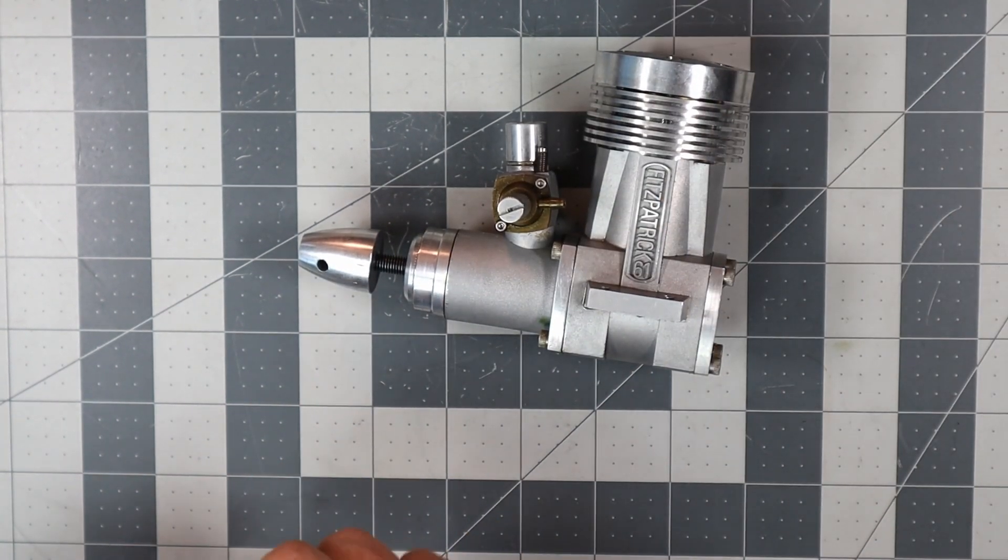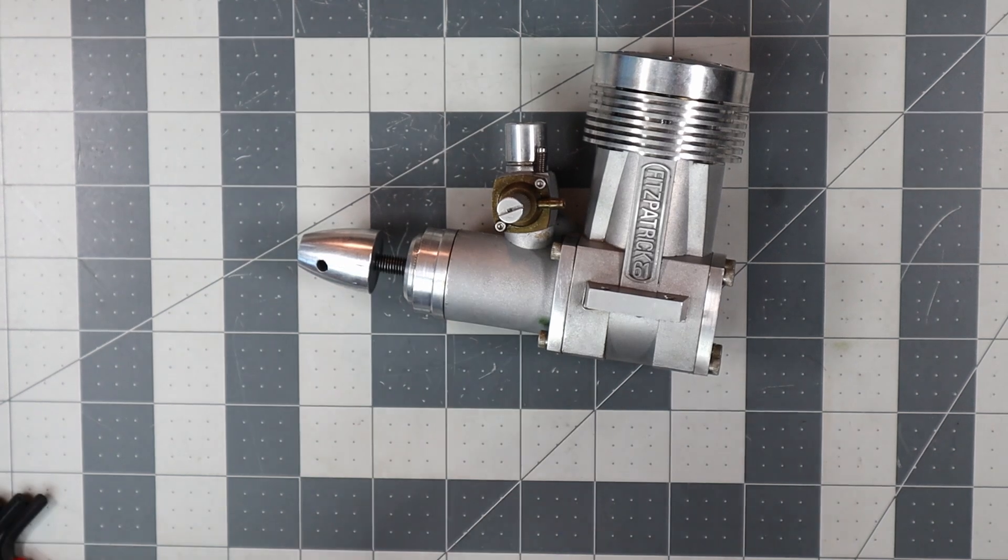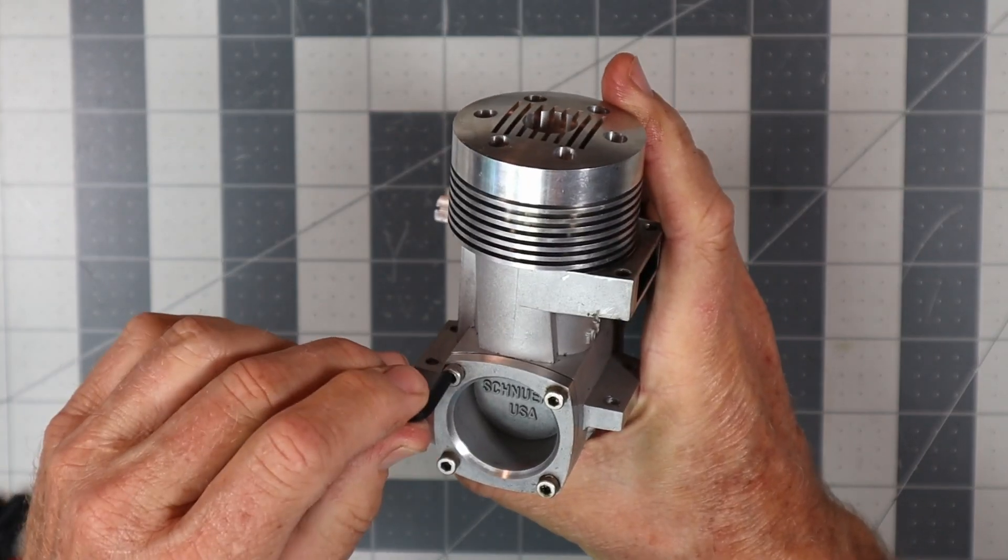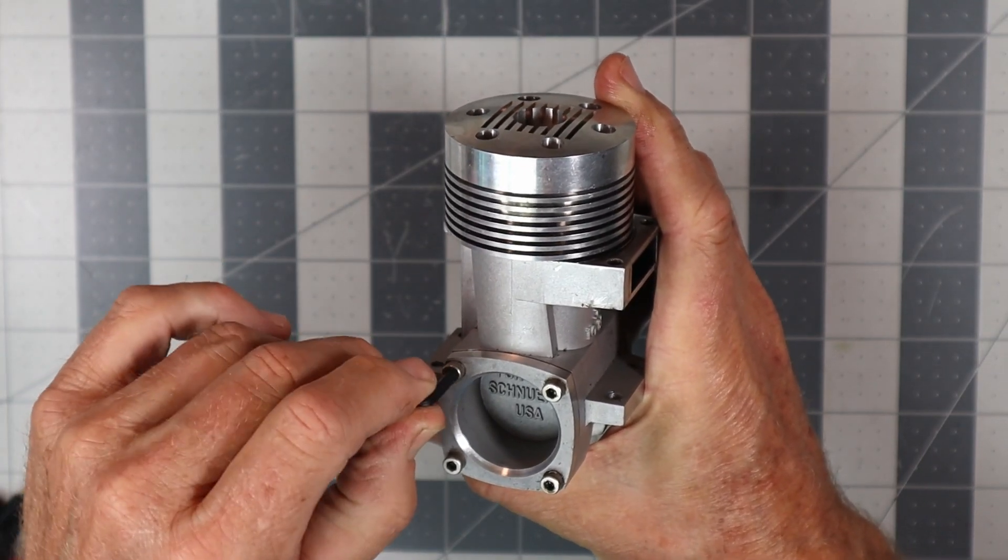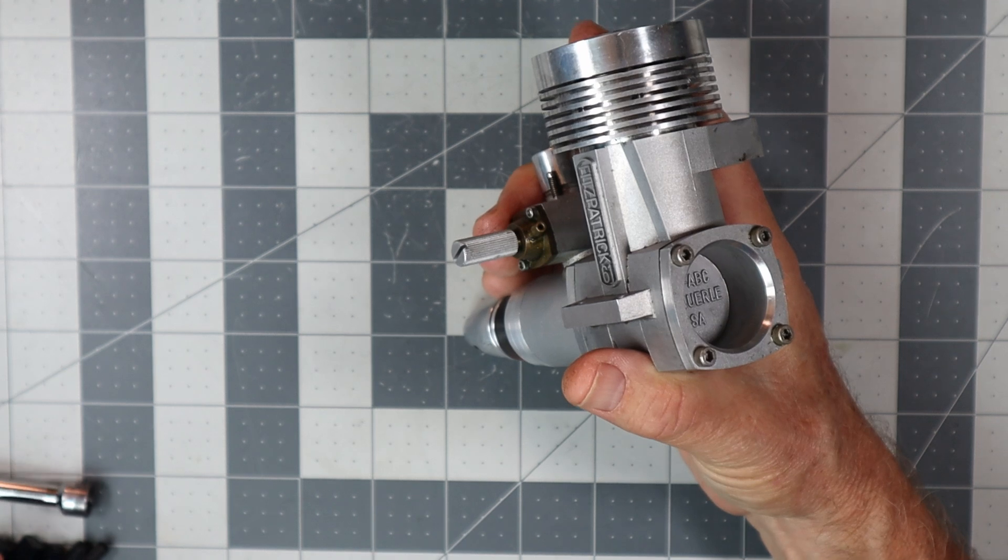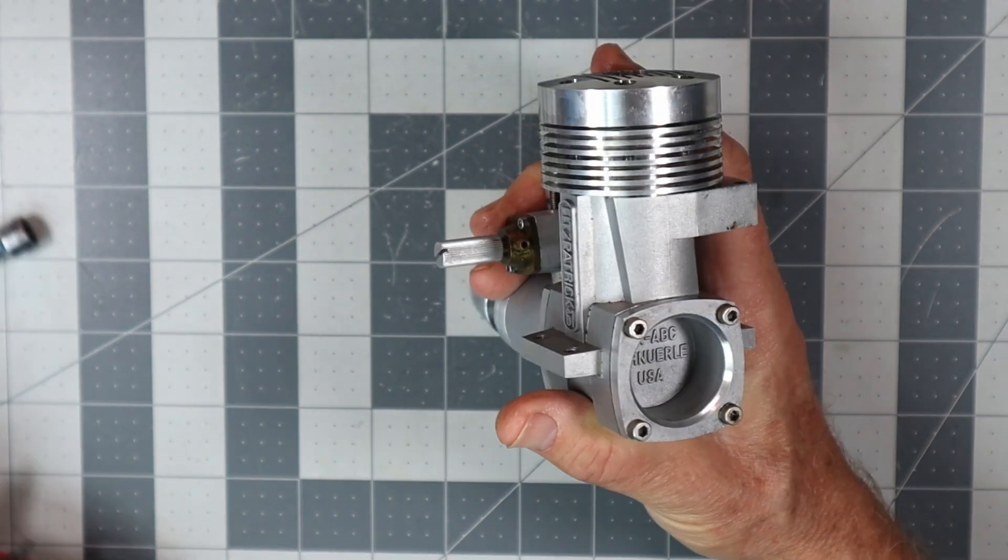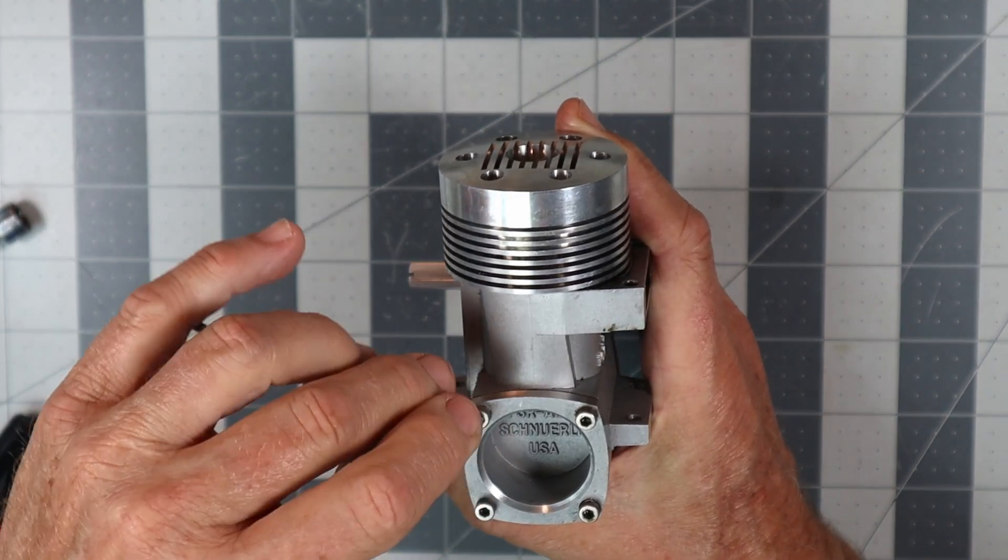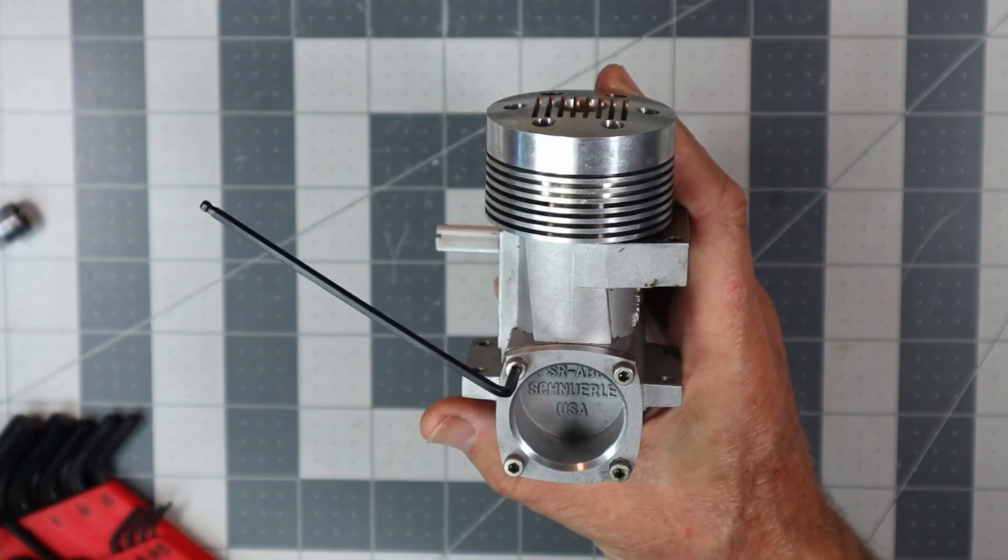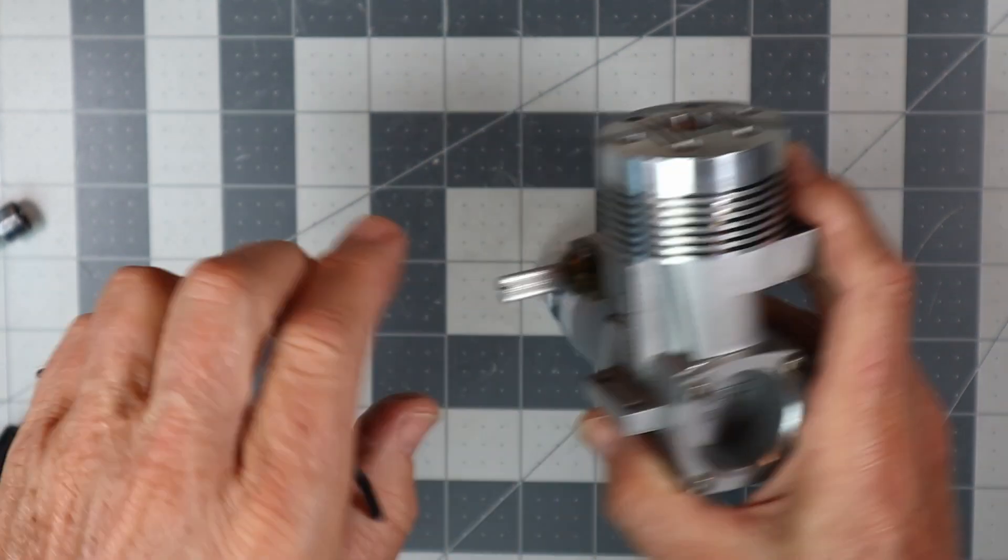So let's start by finding the correct size SAE wrench for this engine because this is an American made engine, therefore it's SAE fasteners. So it looks like seven sixty-fourths is going to be the one for that.